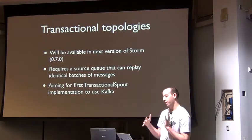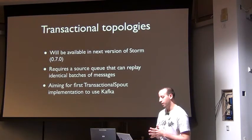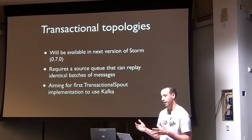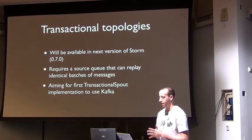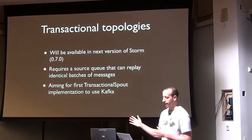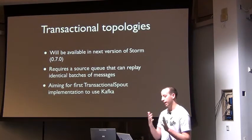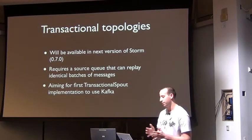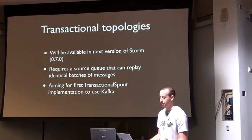Transactional topologies aren't quite available yet — they'll be available in the next version of Storm. It's actually fully implemented; it just needs to finish being tested. They require a more sophisticated queuing system than something like Kestrel, and we're going to target Kafka as the first implementation of the transactional spout.